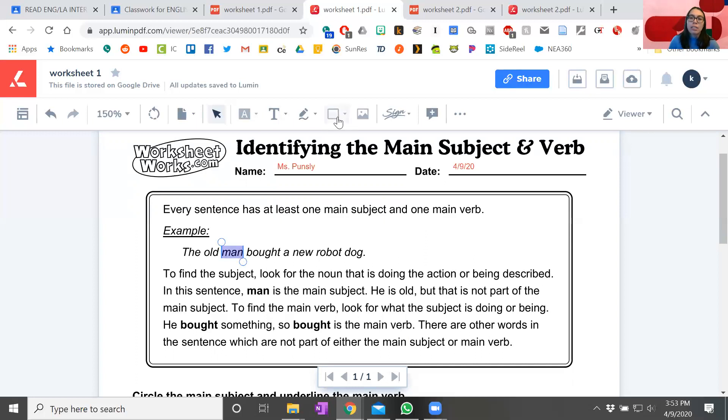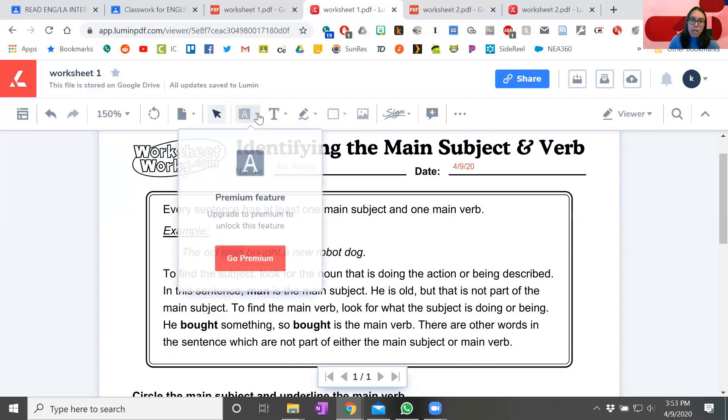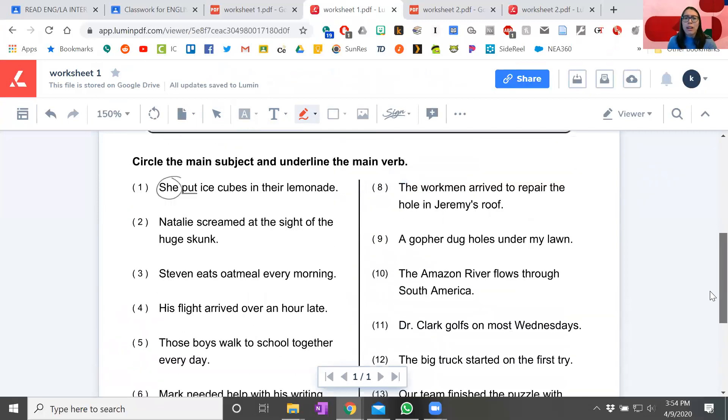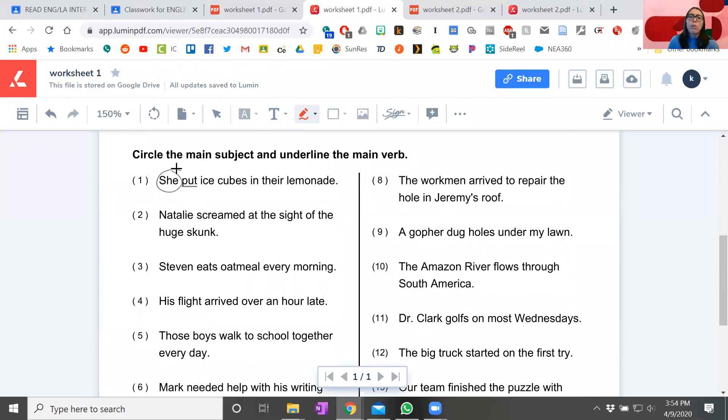So a man is our subject. Man is our subject and bought is our verb. So that's all we're looking for. Some people kind of circled some things randomly, not really sure what happened, but that's all we're looking for. So you see in this first example, you're circling she and underlining put. So for every sentence, you should have one circle, one underline.